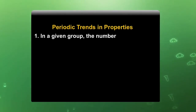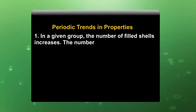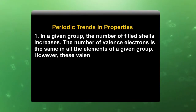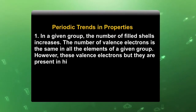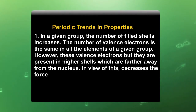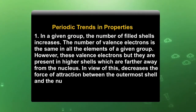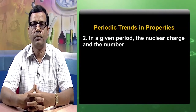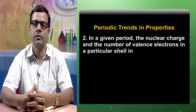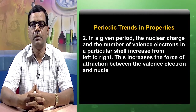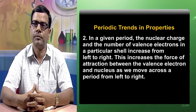In a given group, the number of filled shells increases. The number of valence electrons is the same in all the elements of a given group. However, these valence electrons are present in higher shells which are further away from the nucleus. This decreases the force of attraction between the outermost shell and the nucleus as we move down a group. In a given period, the nuclear charge and the number of valence electrons in a particular shell increases from left to right, which increases the force of attraction between the valence electrons and the nucleus as we move across a period from left to right.